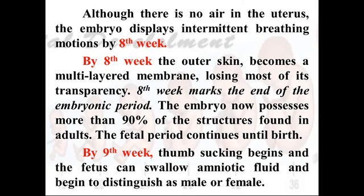By the eighth week, the outer skin, which was very transparent, becomes a multi-layered membrane, losing most of its transparency. This week marks the end of the embryonic period. The embryo now possesses more than 90% of the structures found in adults. After this, the fetal period continues until birth.